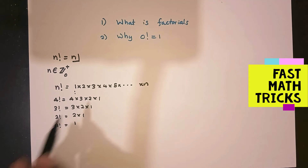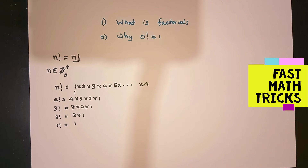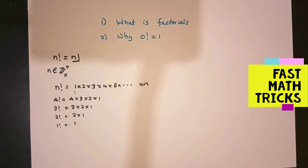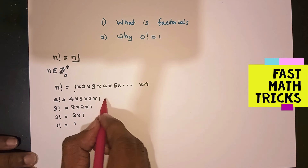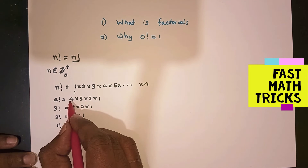Otherwise we can define factorials as: 1 factorial is 1, 2 factorial is 2 into 1, 3 factorial is 3 into 2 into 1, 4 factorial is 4 into 3 into 2 into 1. That is how we define factorial. Now let's see why 0 factorial equals 1, developing it from here.